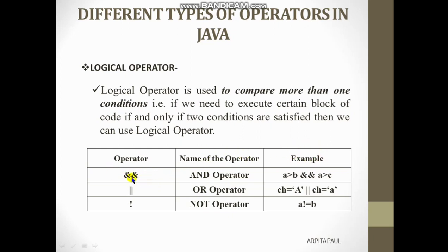The first one is the ampersand-ampersand (&&) operator, called the logical AND operator. Both conditions must be true for the output to be true. For example, to find the largest value among three values a, b, and c: if a > b AND a > c, then only a is the largest. Both conditions should be true — if both are true, the output is true.